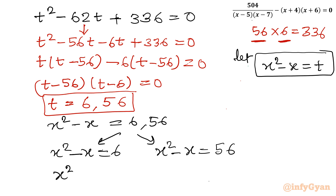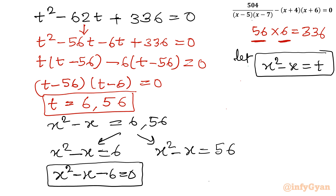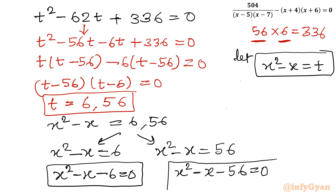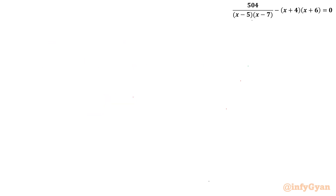Taking the terms to the left side: first quadratic equation is x² minus x minus 6 equal to zero, and second quadratic equation is x² minus x minus 56 equal to zero. We will solve both equations for our solution.